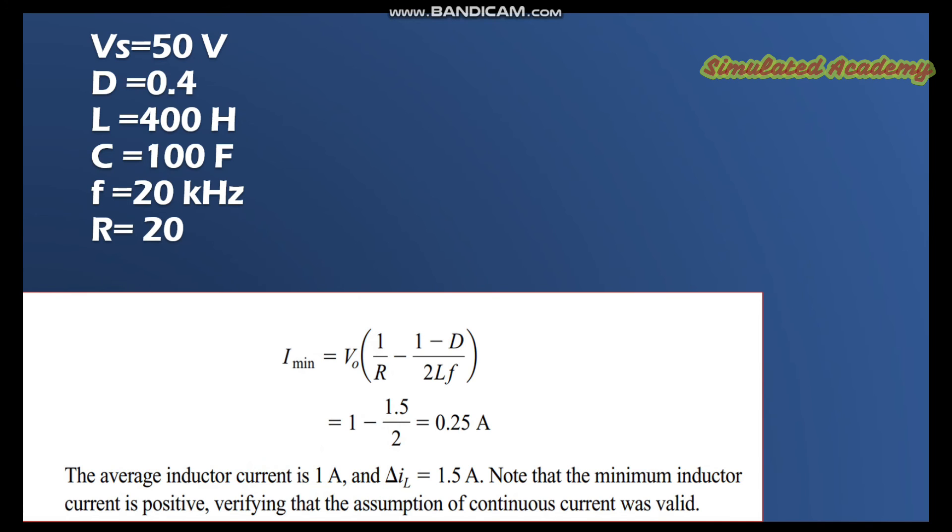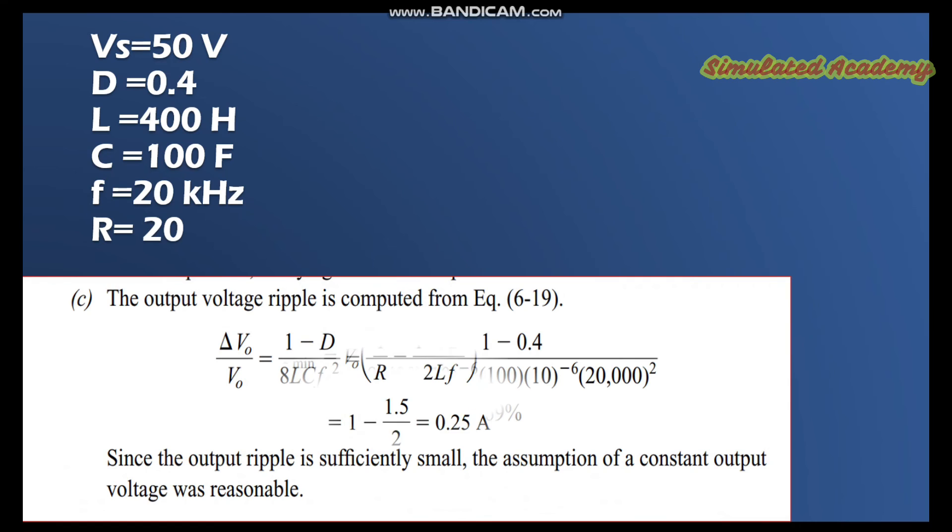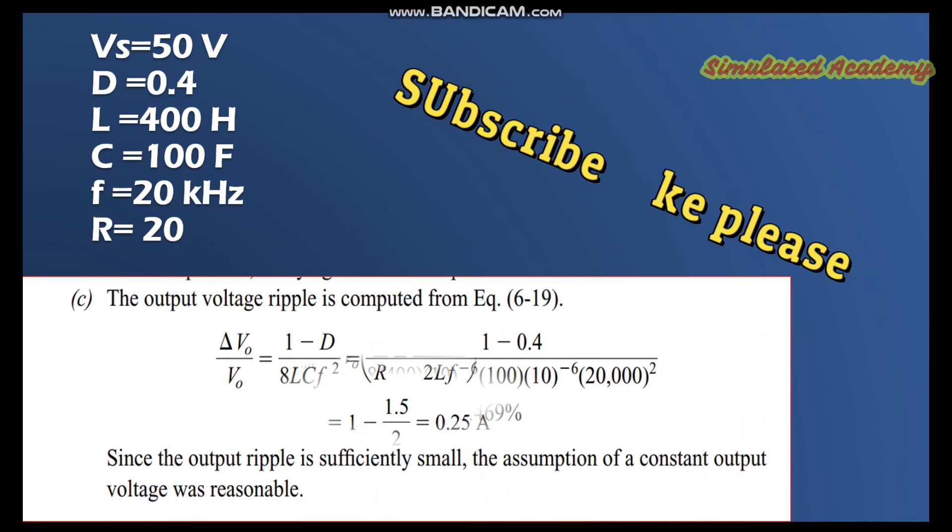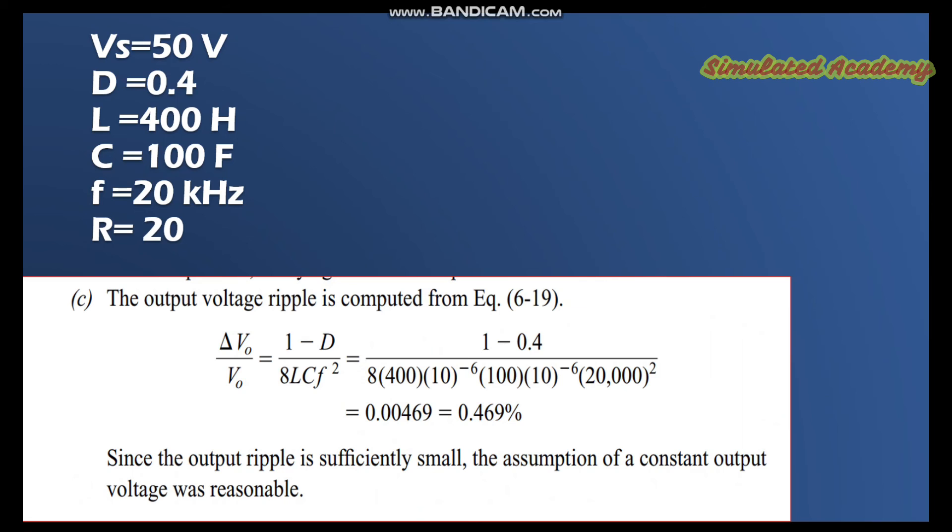Let's find part C. In part C you are asked to find the voltage ripple. Voltage ripple can be defined by using this formula: delta V0 divided by V0. This is called voltage ripple and is equal to 1 minus D divided by 8LCF squared.